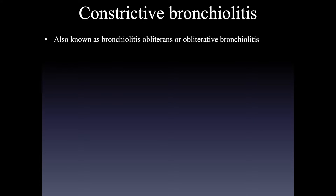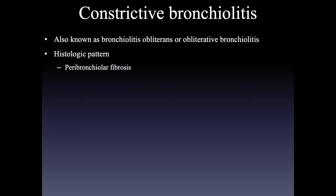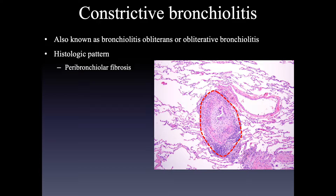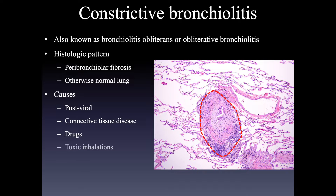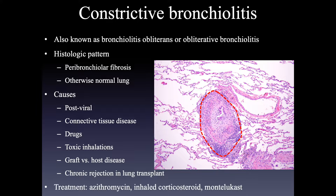Constrictive bronchiolitis goes by several names — synonyms include bronchiolitis obliterans or obliterative bronchiolitis. It is a histologic pattern; on histology you get peribronchial fibrosis, scar tissue forming around small airways, while the rest of the lung is very normal. This pattern may be difficult to see even on histology because the scarring can be quite subtle. Main causes include post-viral infection, connective tissue disease, drugs, toxic inhalations such as chlorine gas, graft-versus-host disease, and chronic rejection in lung transplant. Treatment includes azithromycin, inhaled corticosteroids, and montelukast, which may be effective if caught early, but this is often an irreversible fibrosis, so treatment frequently is not highly effective.